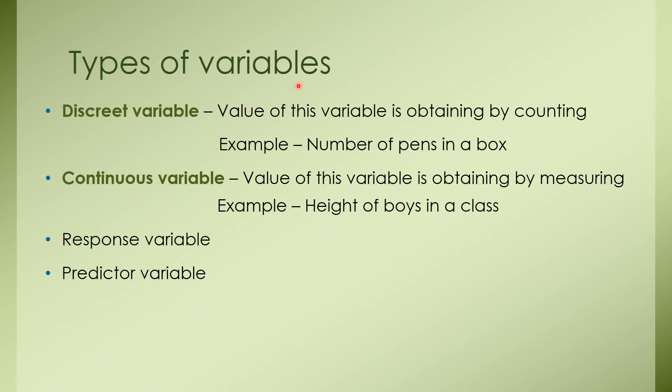Let's start with types of variables. The first one is discrete variable. The value of the discrete variable is obtained by counting. For an example, number of pens in a box, number of girls present in a class. The second variable is continuous variable. The value of the continuous variable is obtained by measuring. For example, height of boys in a class or the weight of potato from field.